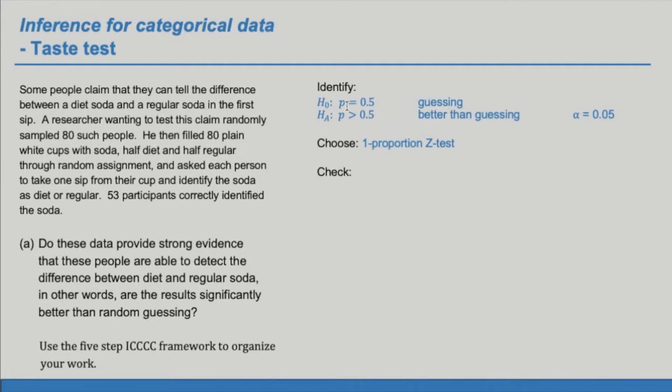We must check whether the normal model can be used. So the two conditions that need to be met are, one, the data comes from a random sample or a random process, and two, success failure condition, in which NP greater than 10 and N times 1 minus P is greater than 10. So the first condition, we can observe that the people were randomly selected and that if H sub 0 were true, the people are identifying the soda by guessing. This would be analogous to guessing heads or tails on a coin flip.